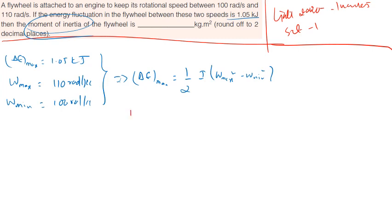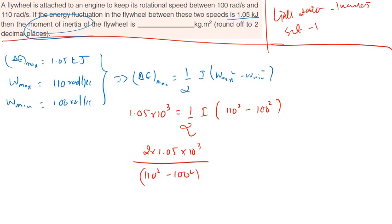Delta E, 1.05 into 10 to the power 3 joule is equals to one by two times I of omega maximum 110 square minus 100 square. So two into 1.05 into 10 to the power three divided by 110 square minus 100 square is equals to I, which is moment of inertia. It is coming out to be 1 kg meter square, so 1 will be the answer.